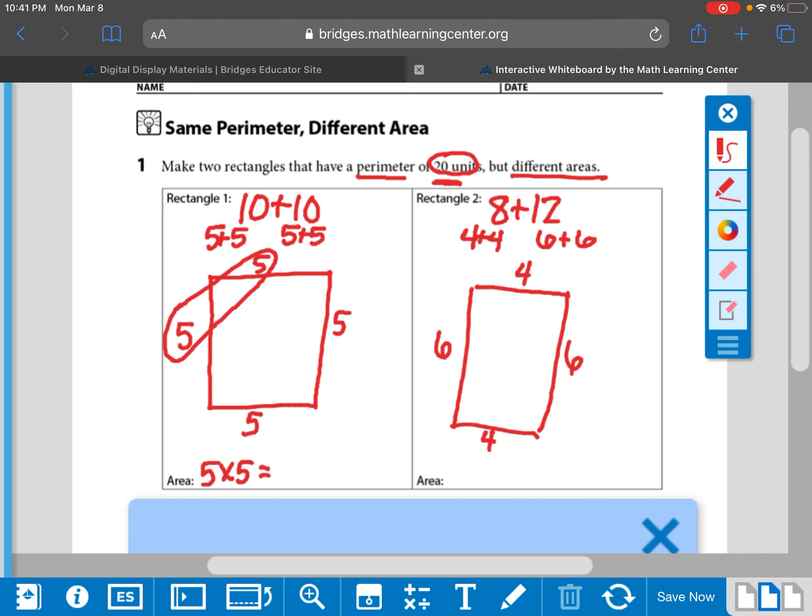And we do 5, 10, 15, 20, 25. So the area over here is 25 square units.